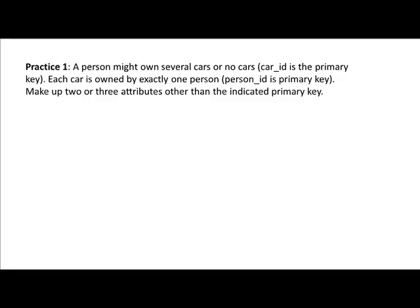Let's do some practice problems to prepare for upcoming assignments. A person might own several cars or no cars. Car ID is the primary key for cars, and each car is owned by exactly one person with person ID as the primary key. We are asked to draw the entity relationship diagram and make up a couple of attributes for each entity type beyond the indicated primary keys. This might represent a conversation with a business person when trying to understand their business.